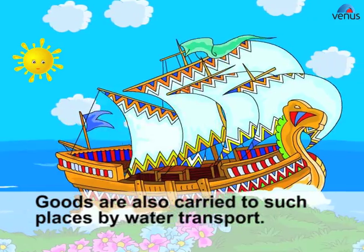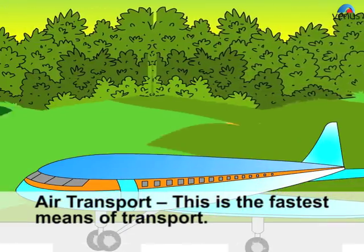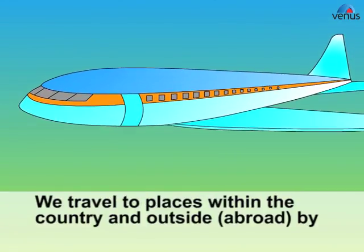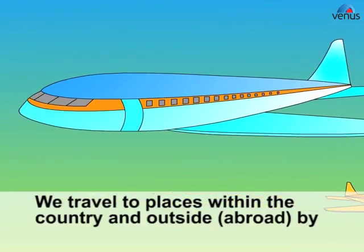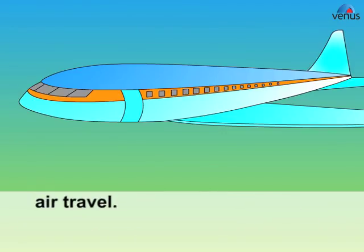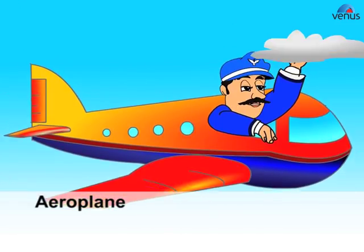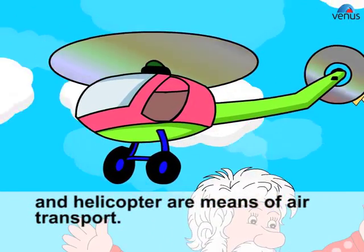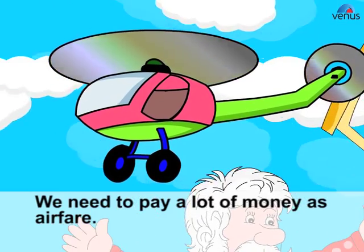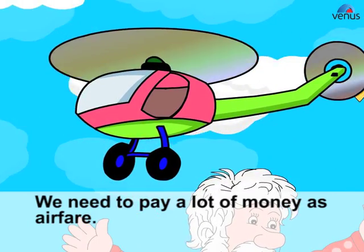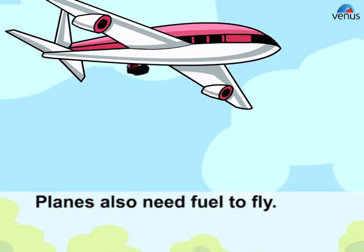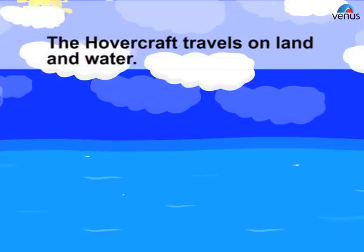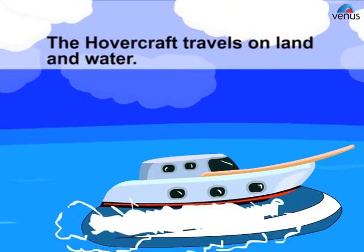We travel to different countries by water transport, and goods are also carried to such places by water transport. Air transport is the fastest means of transport. We travel to places within the country and abroad by air. Aeroplanes and helicopters are means of air transport. We need to pay a lot of money as airfare, and planes also need fuel to fly.